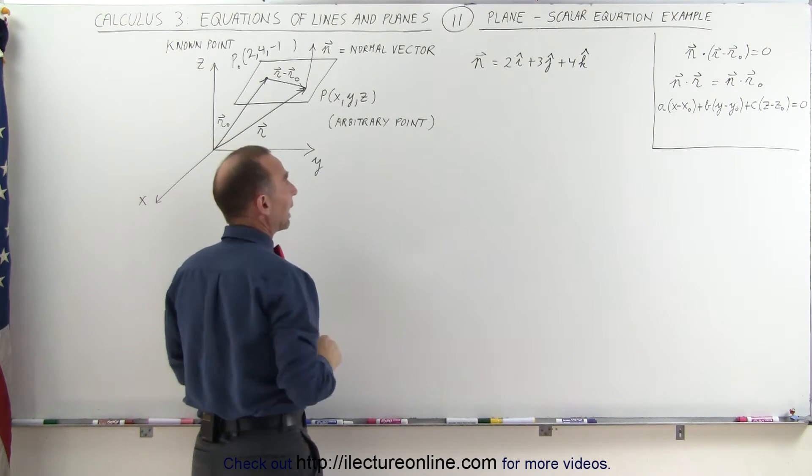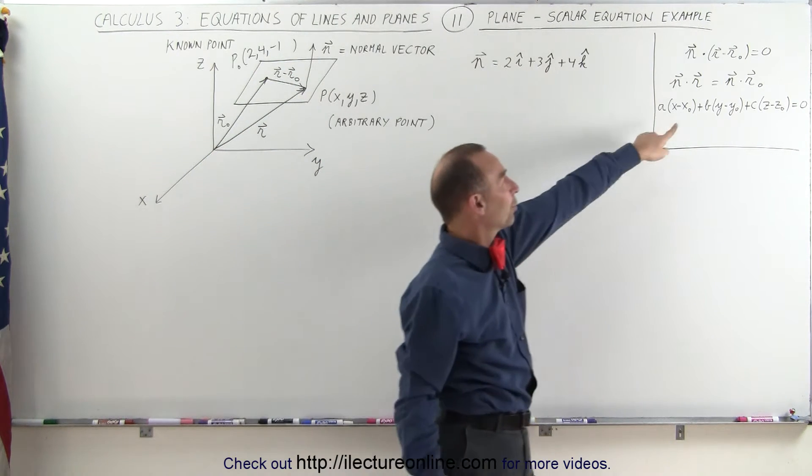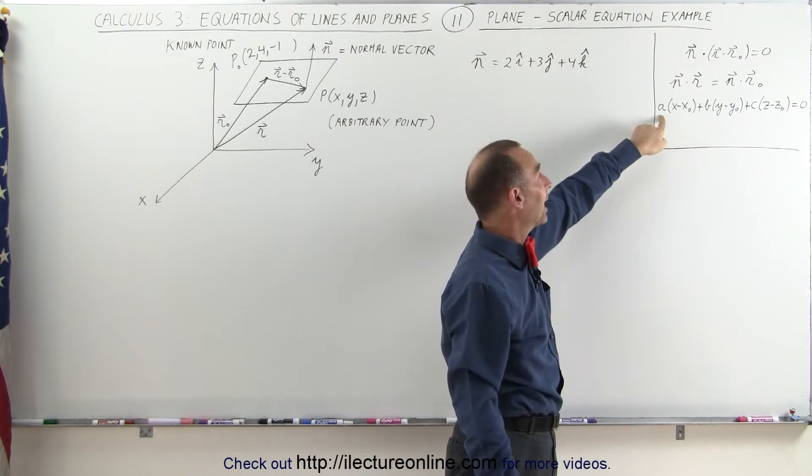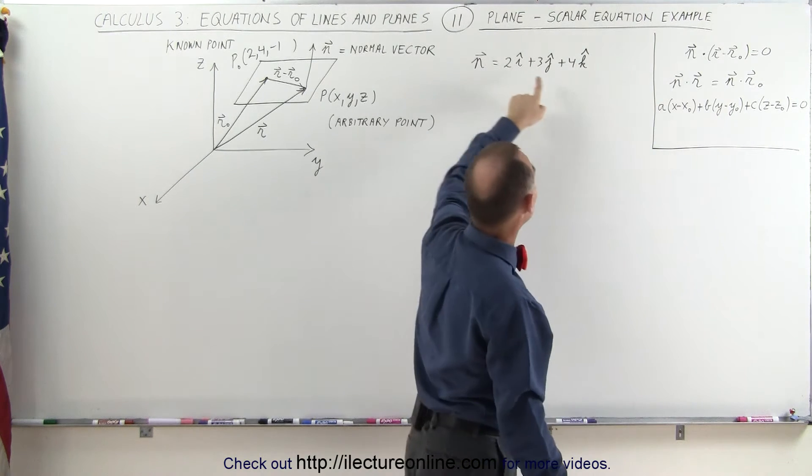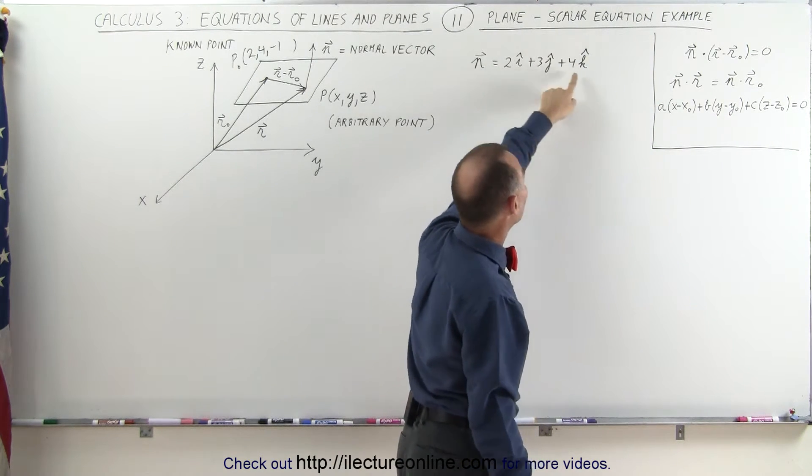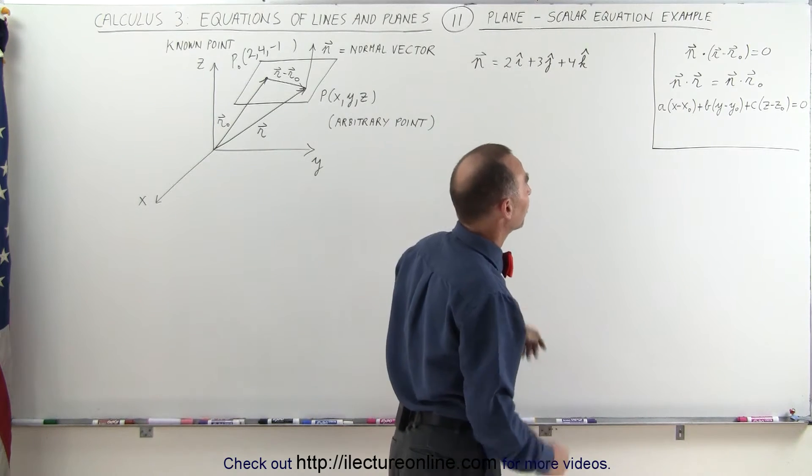The point is right here: 2, 4, negative 1. And this is the equation we're going to use. Notice that A, B, C are the X, Y, and Z components of the orthogonal vector.